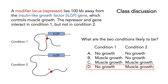The answer here is D. In condition one, the modifier locus is very close to the gene, but the modifier locus is a repressor — so when the repressor comes close to the gene, the gene is turned off. There is no growth. In condition two, that modifier locus is a long way away from the gene; it's not interacting, so the repressor is no longer repressing the gene. The gene can turn on and express, and therefore there's muscle growth. So in condition one, the gene is being repressed — no muscle growth. In condition two, the gene is no longer repressed — it's turned on, and there is muscle growth.